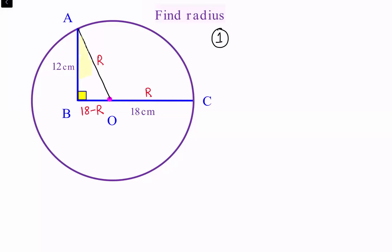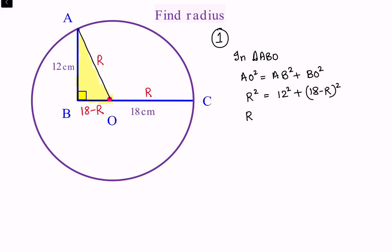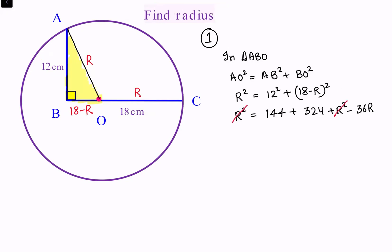In our first approach we are working with triangle ABO. We get AO squared equals AB squared plus BO squared, that's R squared equals 12 squared plus (18 minus R) squared. Solving it: R squared equals 144 plus 324 plus R squared minus 36R. I've applied the A minus B whole square formula. Both R squared terms cancel, giving 36R equals 468, so R equals 468 divided by 36, which is 13 centimeters.